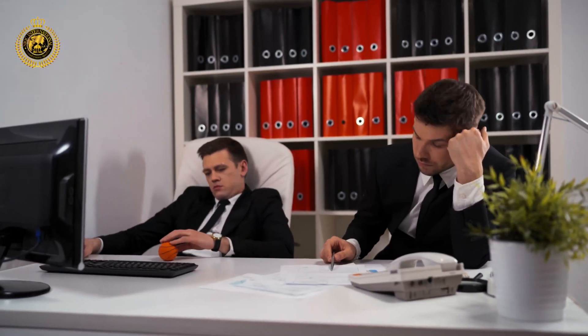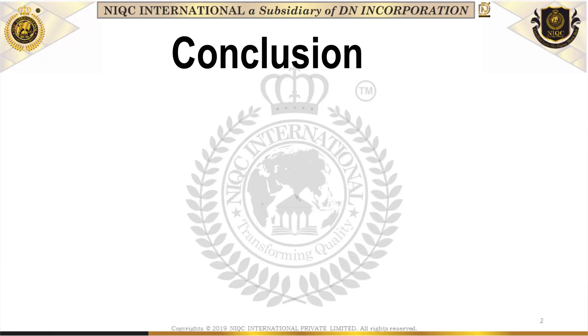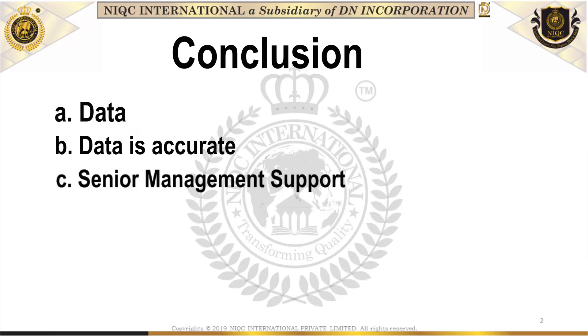If you have the right knowledge, you'll be able to implement. So you need a driver with knowledge, and at the same time passion as well. Many Blackbelts are not passionate enough — they just want to complete six or seven projects in a year, and that's it. If they are not passionate, they cannot be innovative or creative. For deploying a solution and identifying a problem, you really need an innovative, passionate person. Now let's say you're lucky enough and you got all these things: you have the data, your data is accurate, you have senior management support, and you have a skilled, passionate Blackbelt driver.